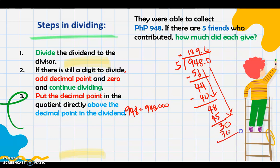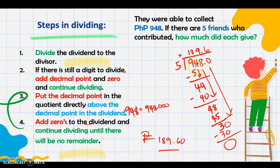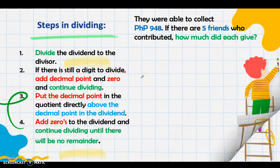6 times 5 is 30, no more remainder. But if there is still another remainder, you need to add another 0, bring down the 0, and continue dividing. The last step: add 0s to the dividend and continue dividing until there is no remainder. The answer is: each gave 189 pesos and 60 centavos. To check, multiply 189.60 times 5, and you will get 948. If you get 948, your answer is correct.